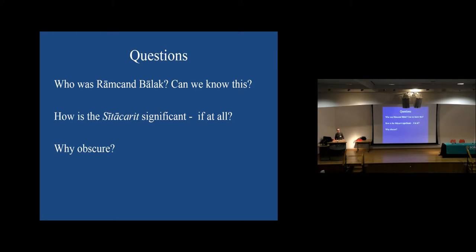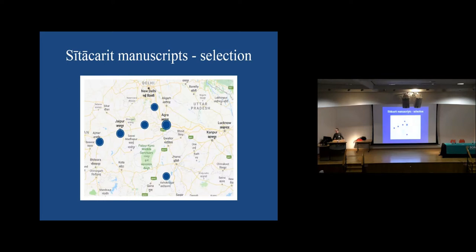Why is it that a text can be thought of as significant and important, and still has never been printed, never been accessed in modern days? I started by looking at manuscripts around India. These spots indicate not a single manuscript but sites I accessed or sourced manuscripts from, where there were multiple, complete manuscripts of the text.